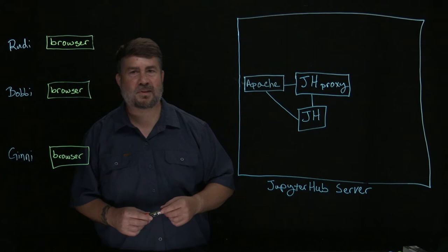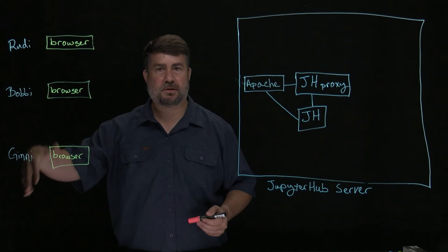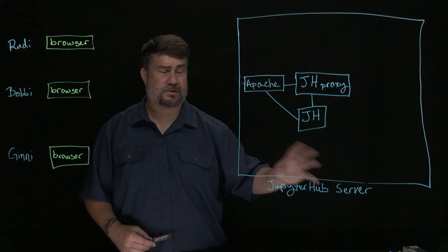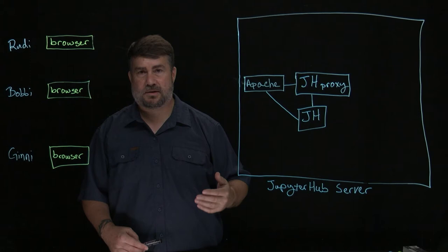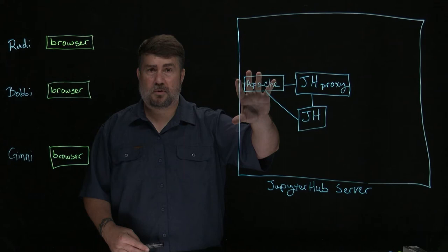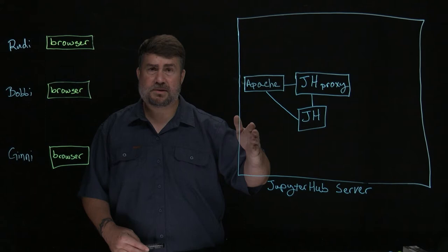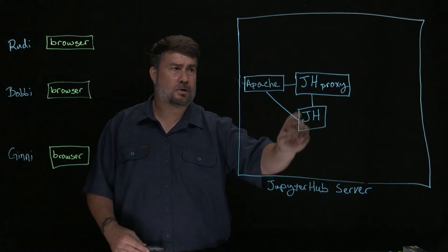So how does JupyterHub work from a more dynamic perspective? Let's suppose we have three users — Rudy, Bobby, and Ginny — with their browsers, looking to connect to a JupyterHub server for their research group, campus facility, or employer. This server uses Apache. A lot of sites are familiar with web servers like Apache and Nginx and how to secure them, making it a good option to capture web requests, route them to JupyterHub or other services, and do TLS termination for the entire host. Behind it, there's JupyterHub and the proxy — JupyterHub does authentication and the proxy connects the user to what they launch.